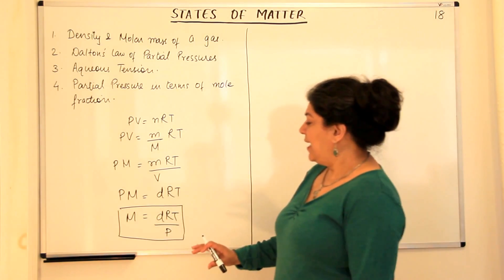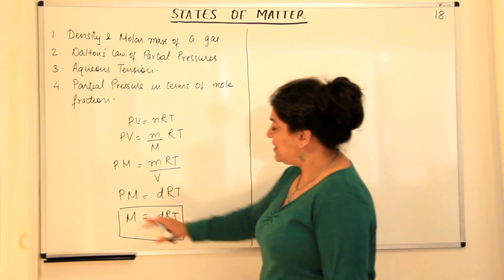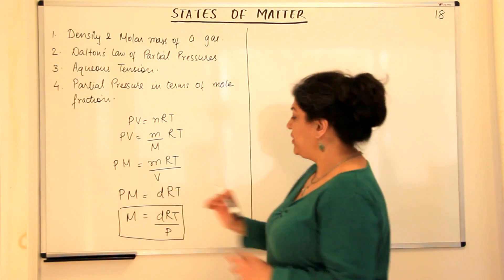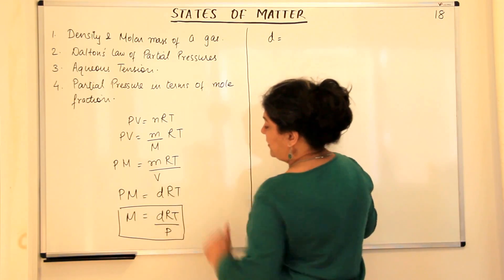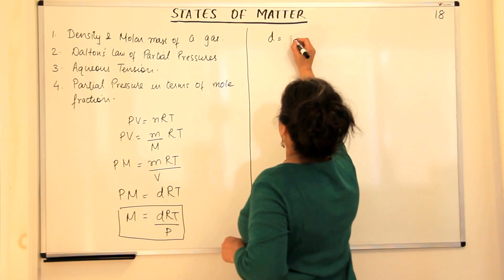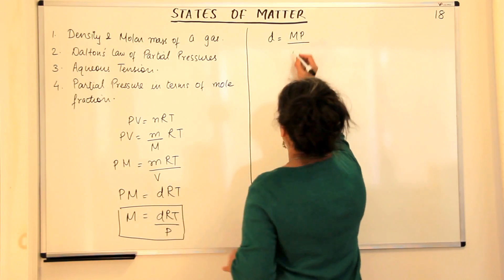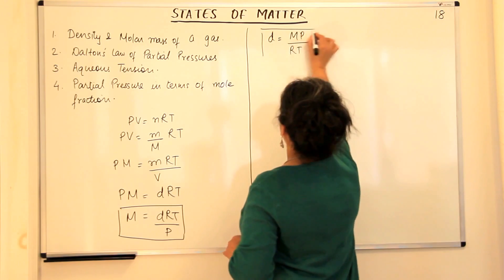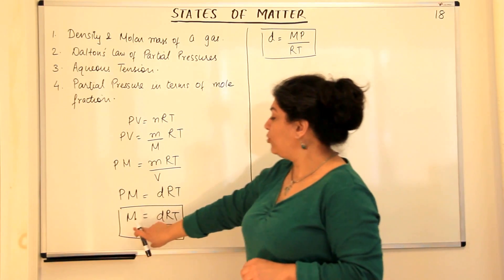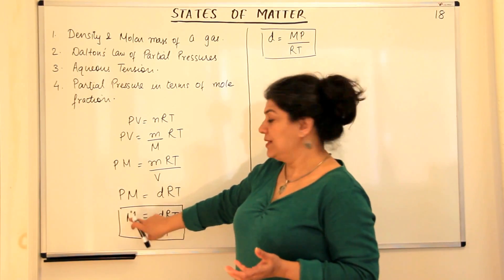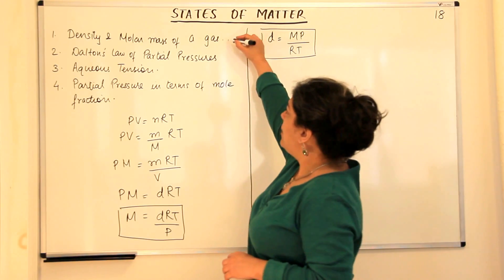Similarly, if we rearrange and want to find density, we take everything else to the other side. Density would be equal to MP/RT. So using the ideal gas equation, if you have to calculate the molar mass, you use M = dRT/P. And if you have to find out density, you use d = MP/RT. That was point one. We now come to the second point — Dalton's law of partial pressures.